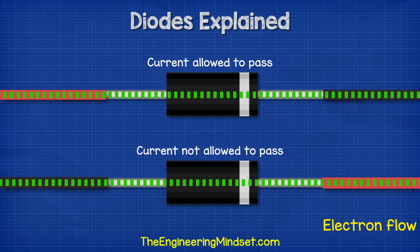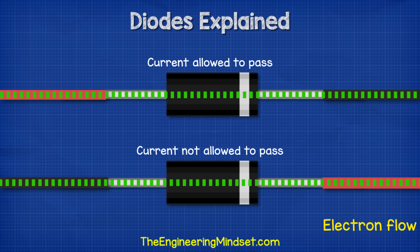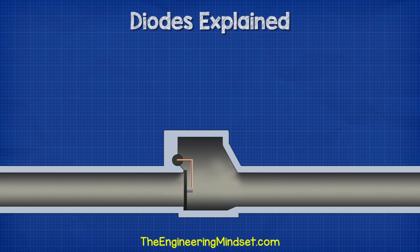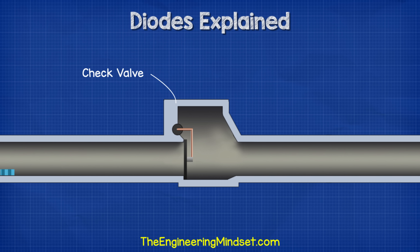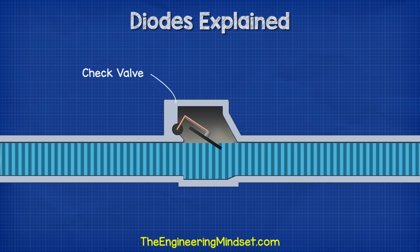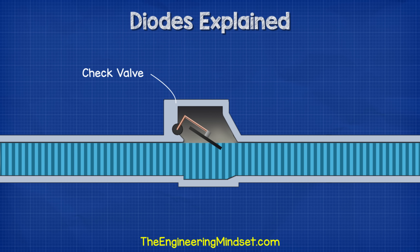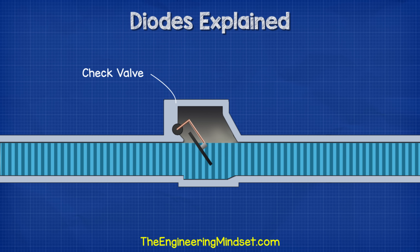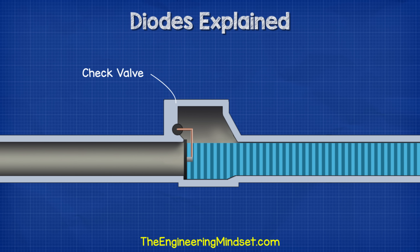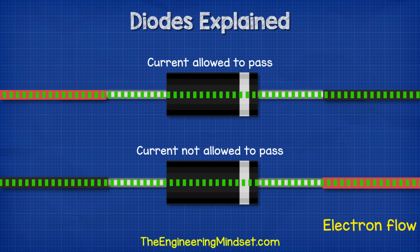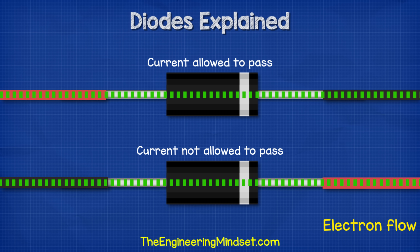A diode allows current to flow in only one direction in a circuit. If we imagine a water pipe with a swing valve installed, as water flows through the pipe it will push open the swing gate and continue to flow through. However if the water changes direction it will push the gate shut and prevent it from flowing. Therefore water can only flow in one direction, which is very similar to a diode.